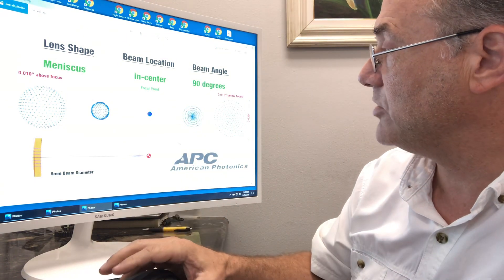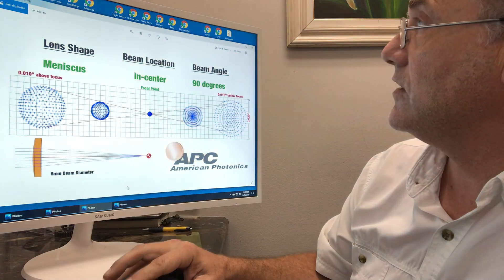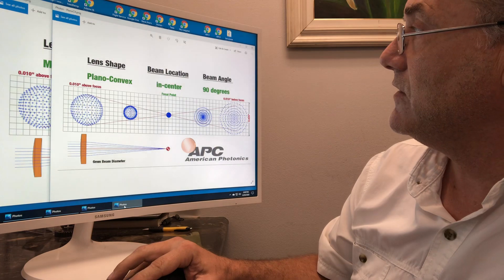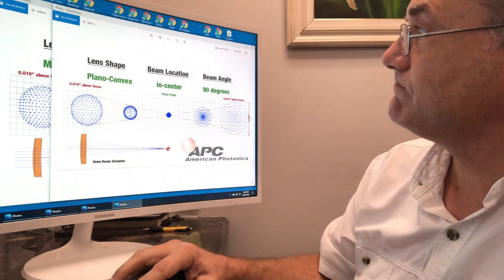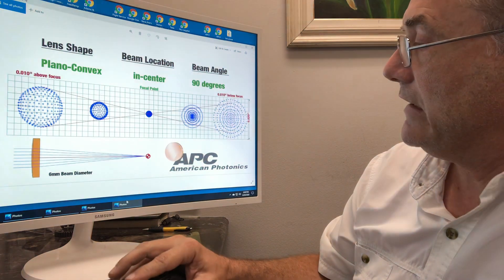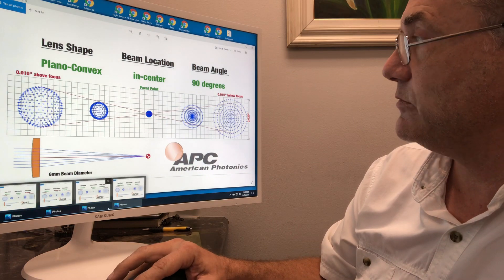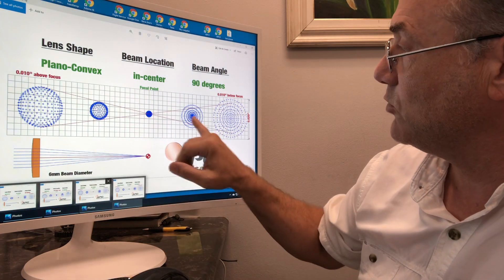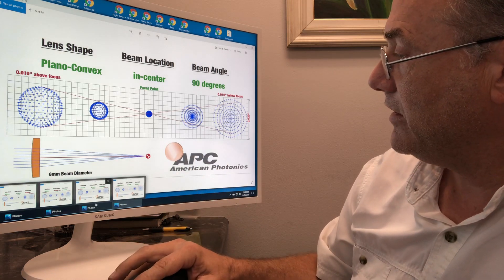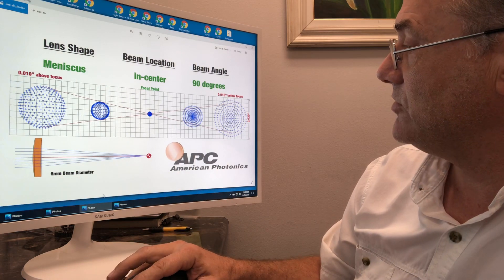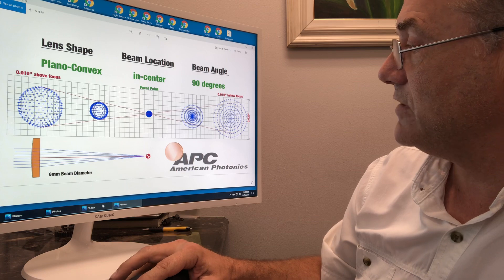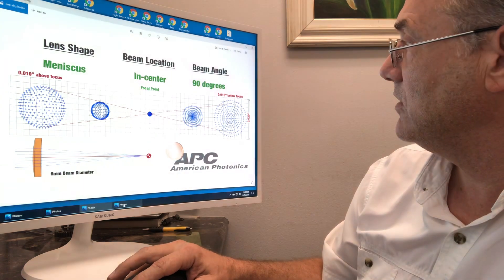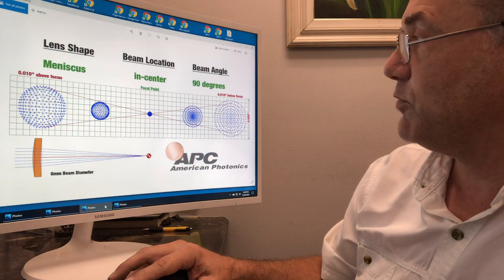But what I really want to show you here is, this is the meniscus, this is the plano-convex, and the differences between a plano-convex and a meniscus, actually, you have a little more energy density here, a little more here, but it's only the difference is a 2-thousandths versus a 3-thousandths spot size. I'm just going to go back and forth between the two, but this is with perfect beam alignment.